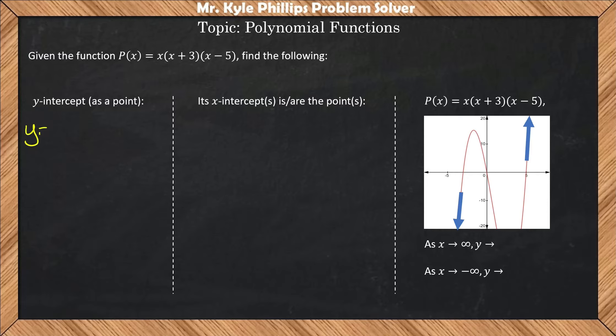So here, the y value is going to be 0 times (0 plus 3) times (0 minus 5). Now we can go ahead and kind of end this problem early because we are multiplying here and we know anything times 0 is 0. But if we wanted to write out the steps, we could. Here is 0 times 3 times negative 5. So we have 0 times 3 is 0, and 0 times negative 5 is 0.